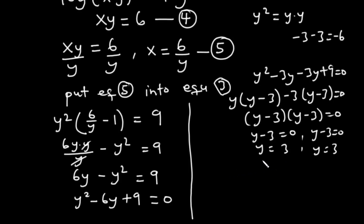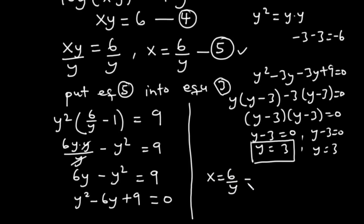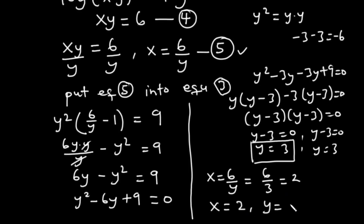Now let's substitute y equals 3 into equation 5: x equals 6 divided by y equals 6 divided by 3 equals 2. So x equals 2. The values for x and y are 2 and 3 respectively.